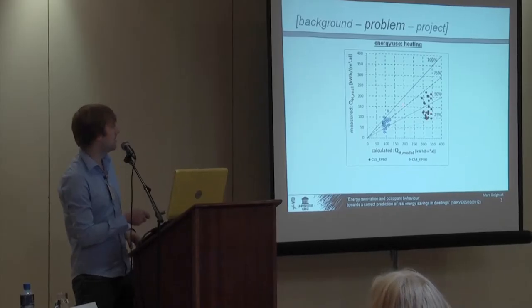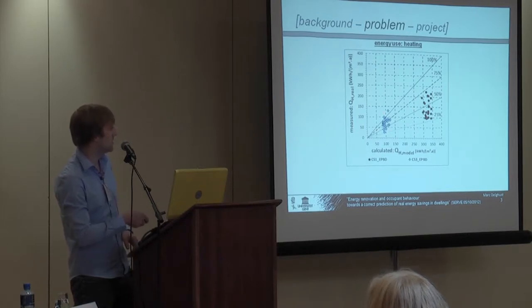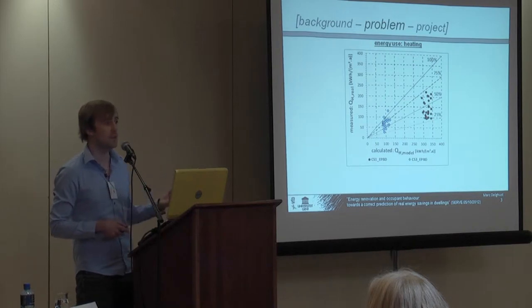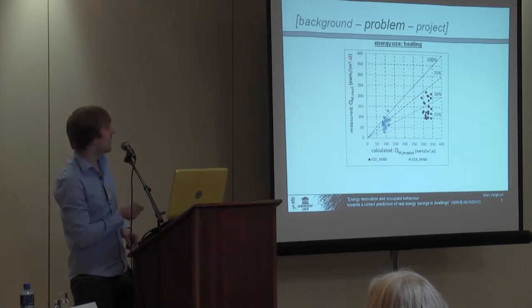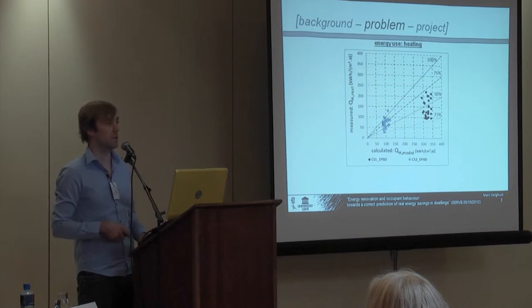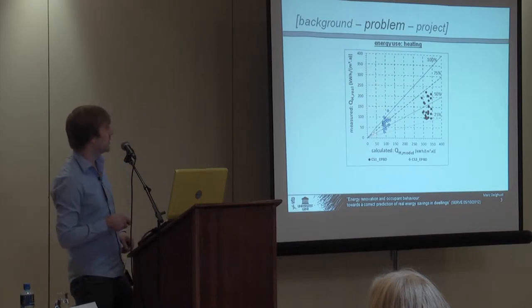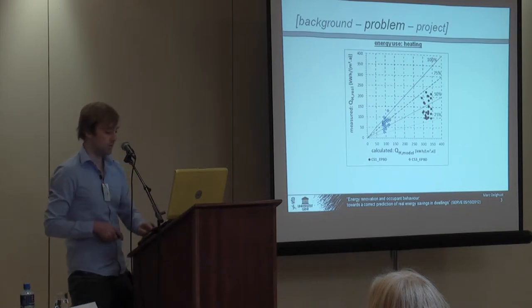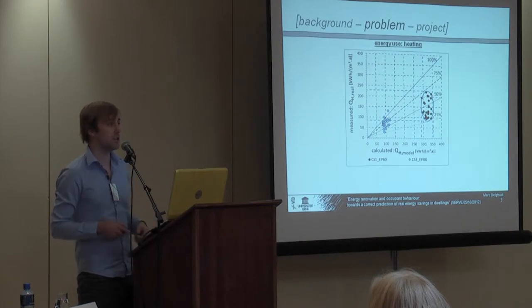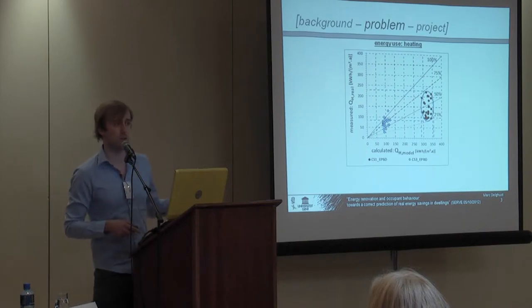But the problem is — and here I already show some results from further in the study — you see results from two different neighbourhoods. On the right side you have an old neighbourhood, on the left side a new neighbourhood. On the base axis you find the calculated estimated energy use for heating, and on the y-axis you find the measured energy use. Normally, if everything was okay, we should be on this line, having a perfect agreement. Starting at the old neighbourhood, the first thing we see is we have quite a variation — those are nearly identical houses, I will come back to that later.